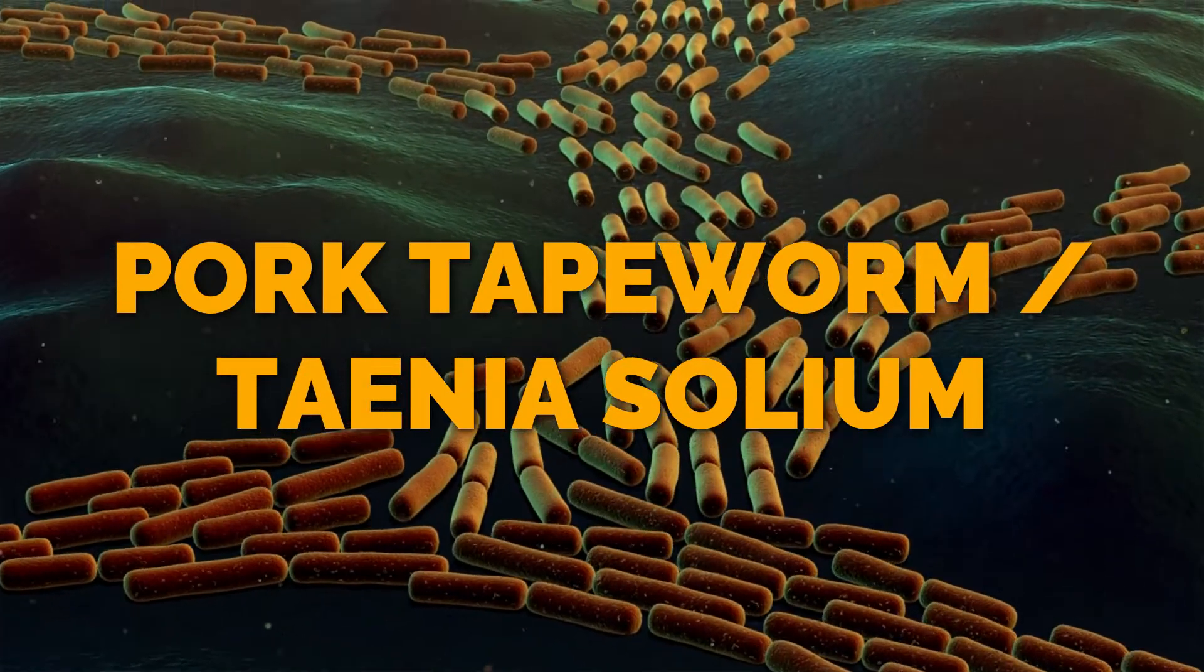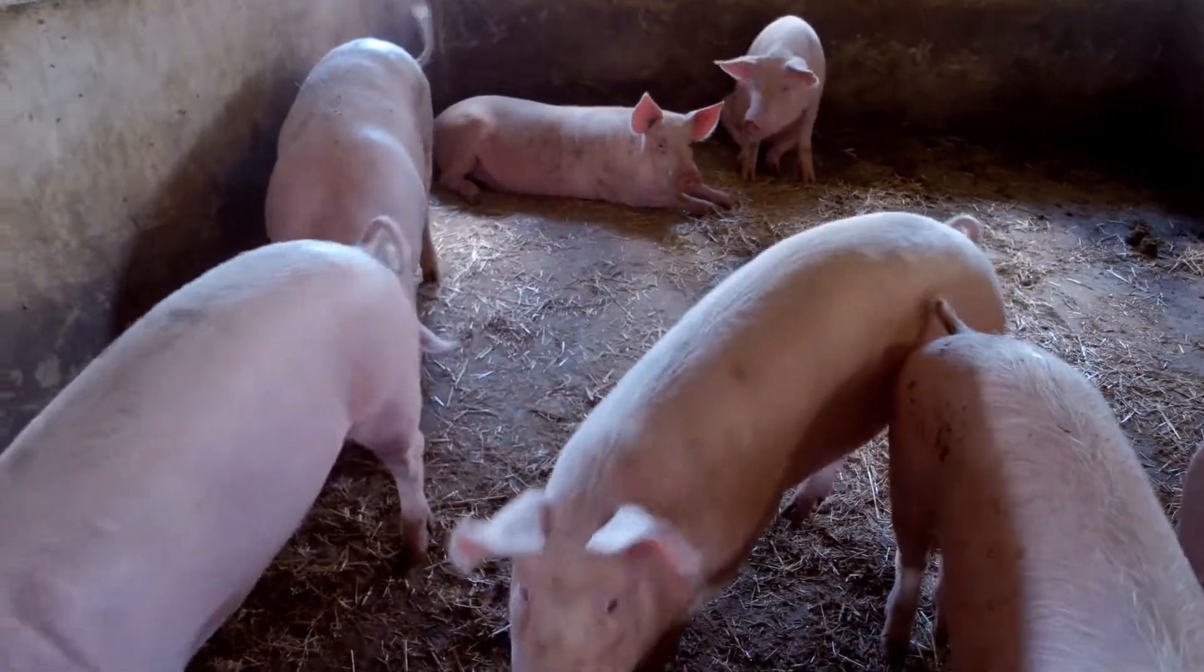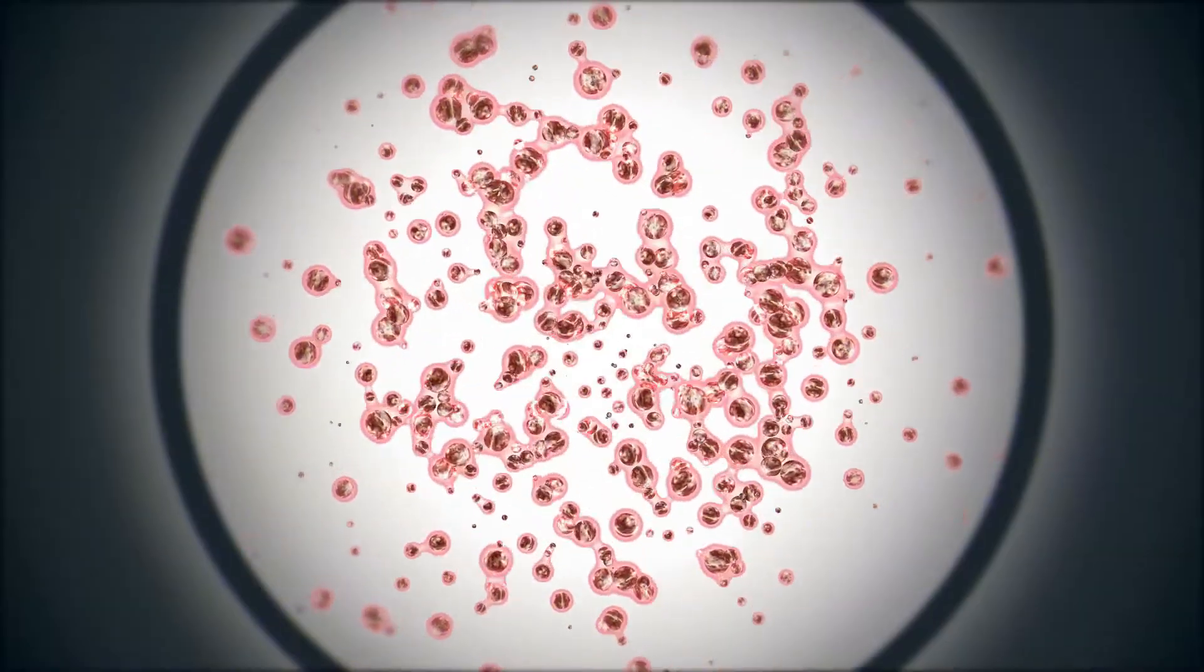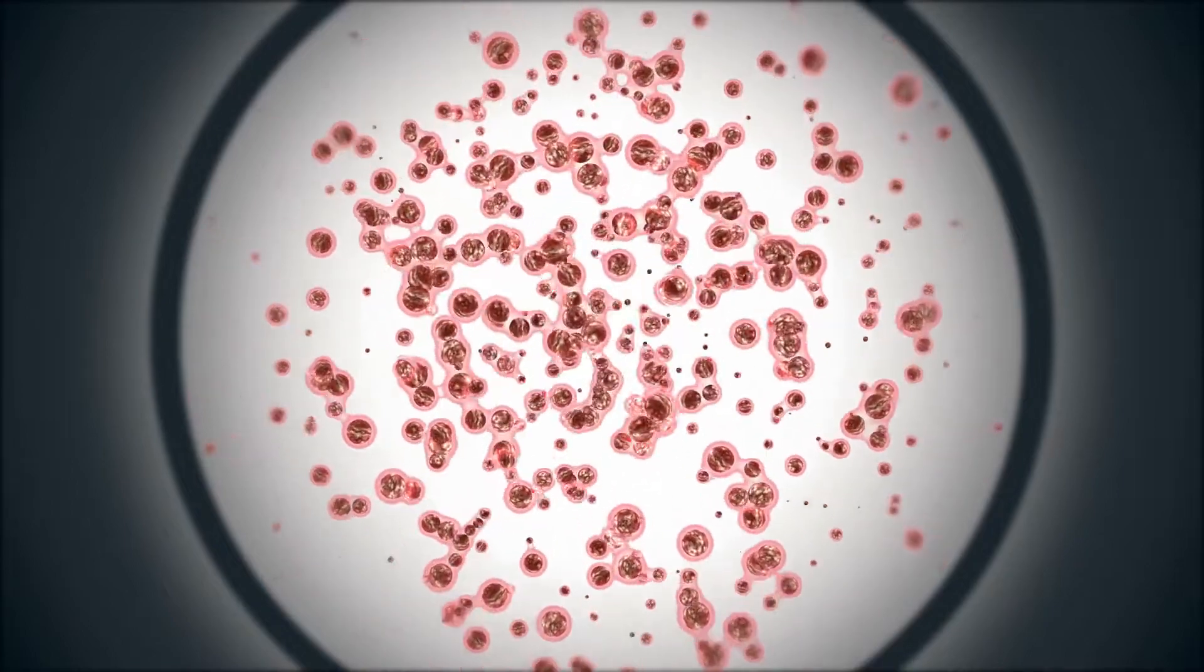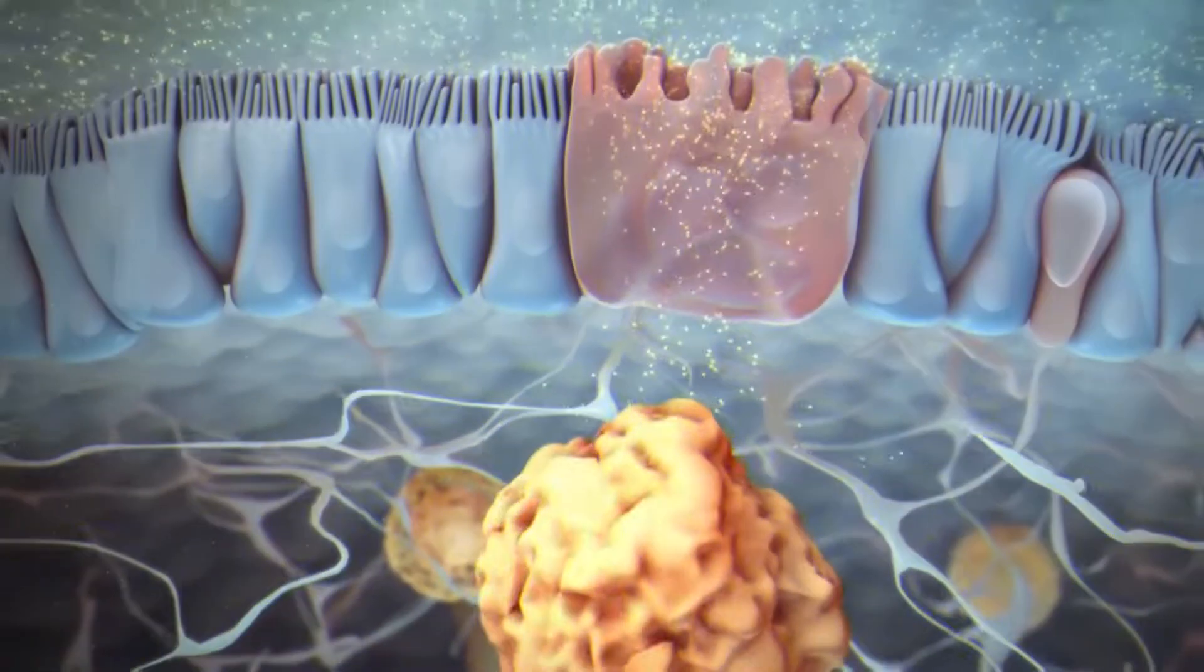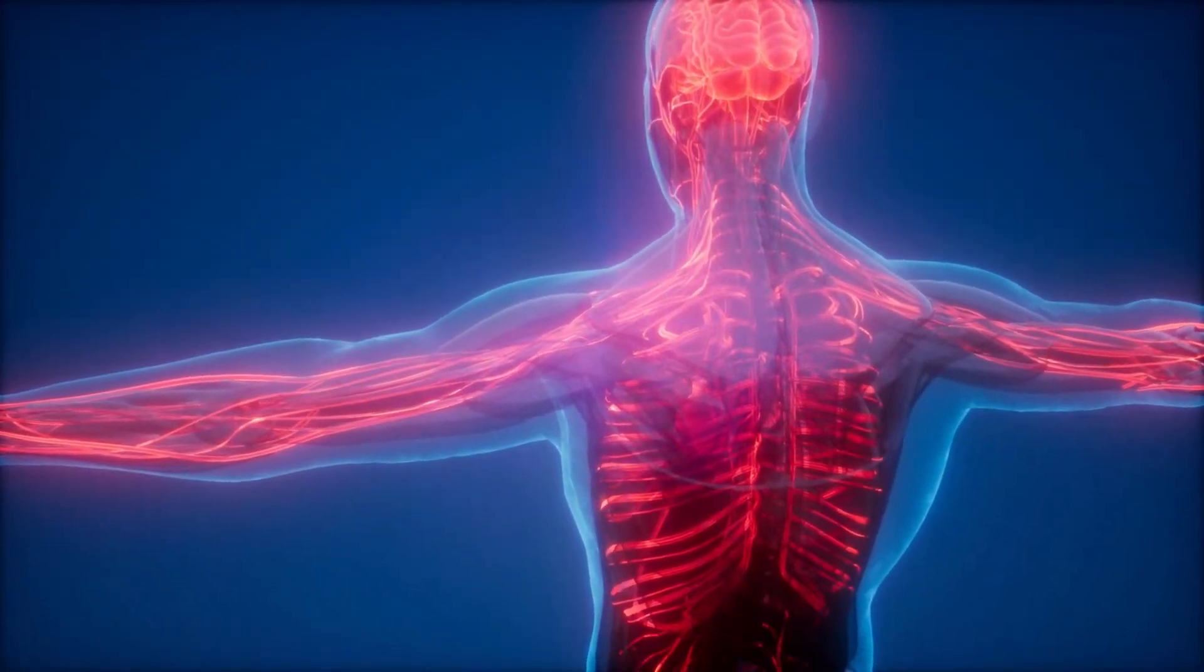Pork Tapeworm Taenia solium. Taenia solium is also called pork tapeworm, transmitted mostly from pork. Its eggs containing infective larvae travel from the intestine to the blood of the host. They settle themselves in different tissues, especially going towards the central nervous system.